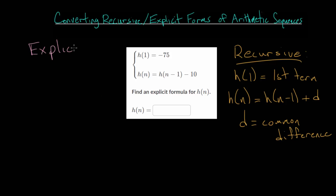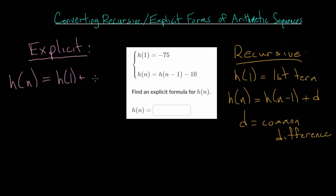The explicit formula looks a little bit different. This one is more useful for finding a specific term in the sequence, whereas recursive is useful for generating the sequence from the first term, then going to the second, the third, and so on. Our explicit formula for the nth term h is equal to the first term h of 1, plus the common difference d multiplied by n minus 1 — adding that common difference one less time than the term we're looking for, since you don't want to add the common difference for your first term.